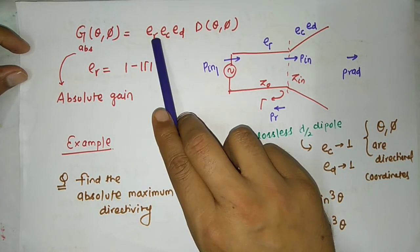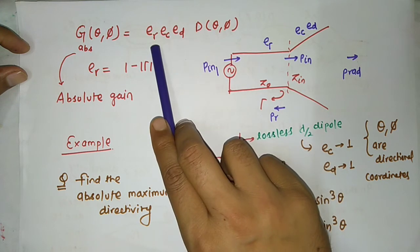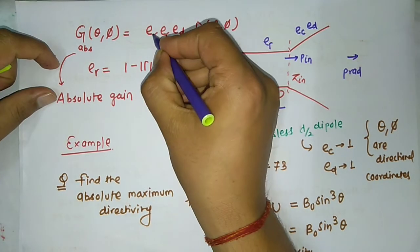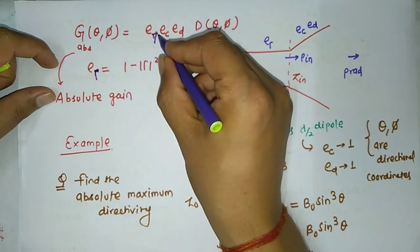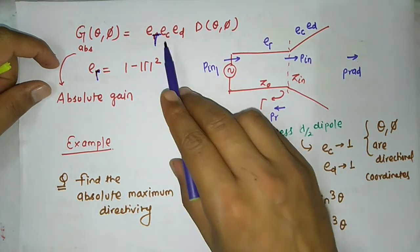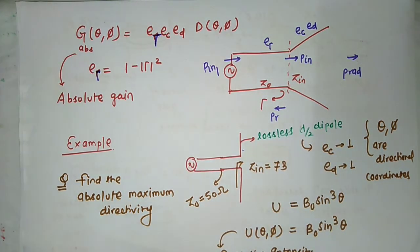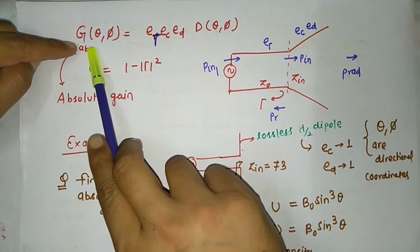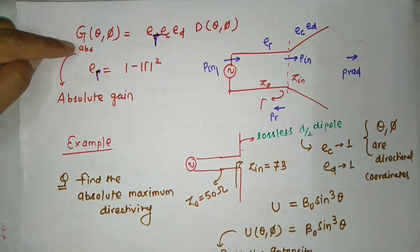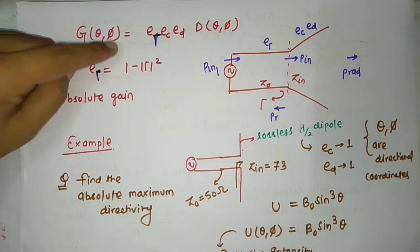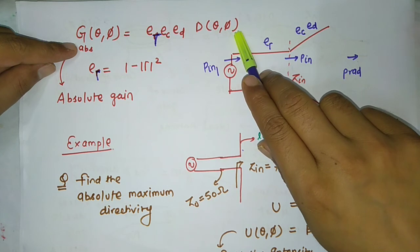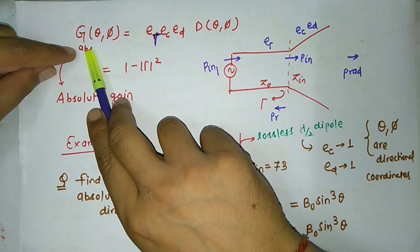Gain = efficiency × directivity. Efficiency involves reflection coefficient efficiency E_gamma, conductor efficiency, and dielectric efficiency. If all three losses are considered — reflection loss, conductor loss, and dielectric loss — this gain is called absolute gain. Gain is a function of directional coordinates theta and phi because it depends on directivity, which depends on directional coordinates.